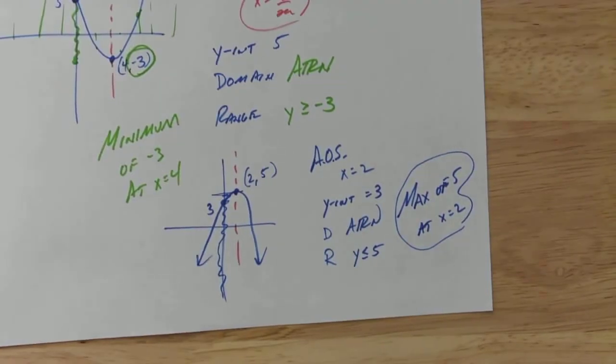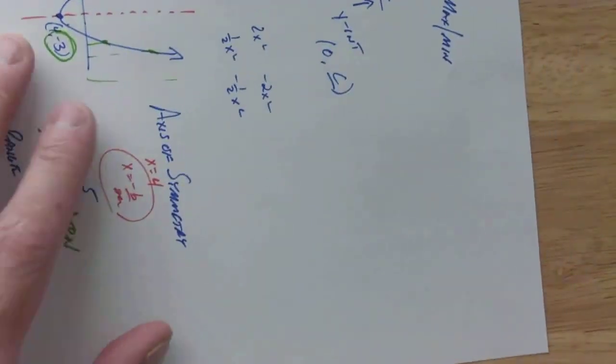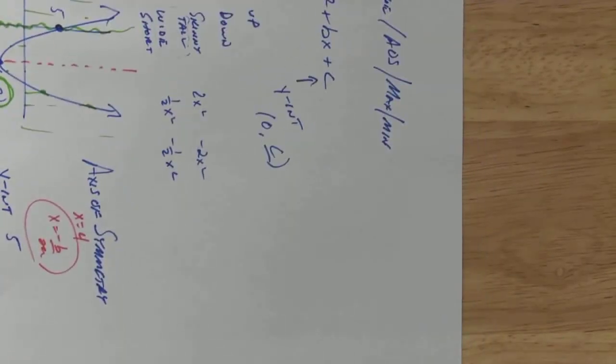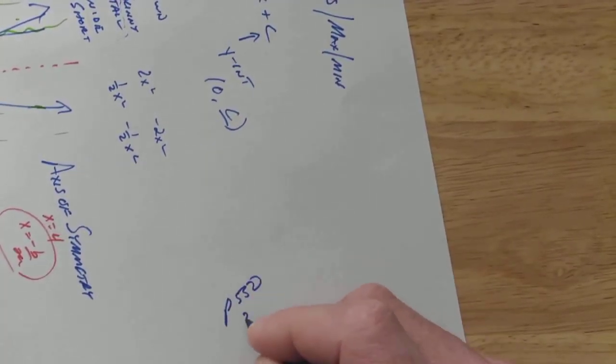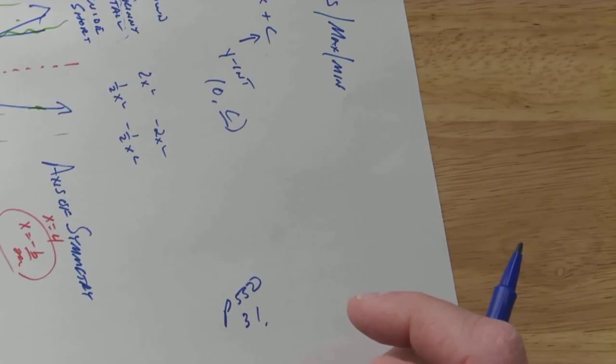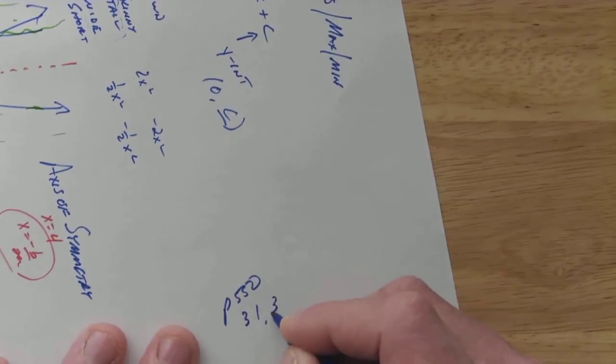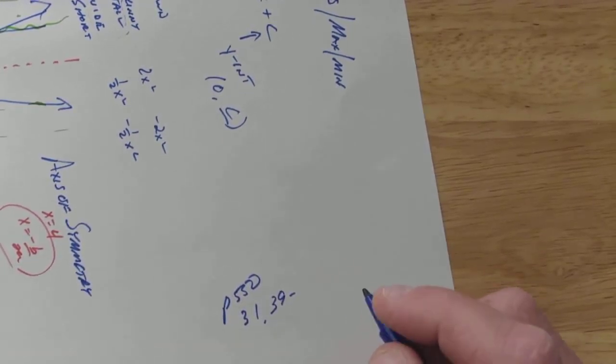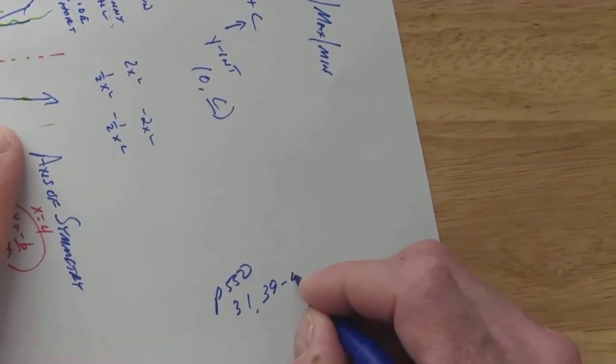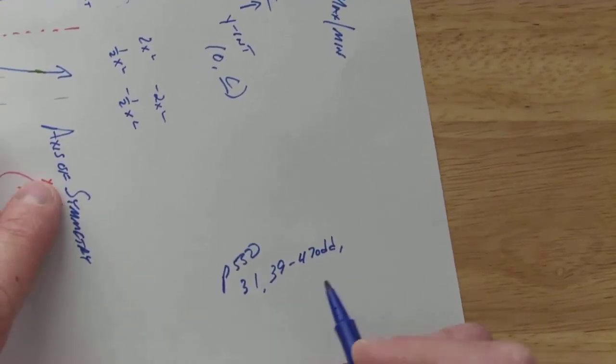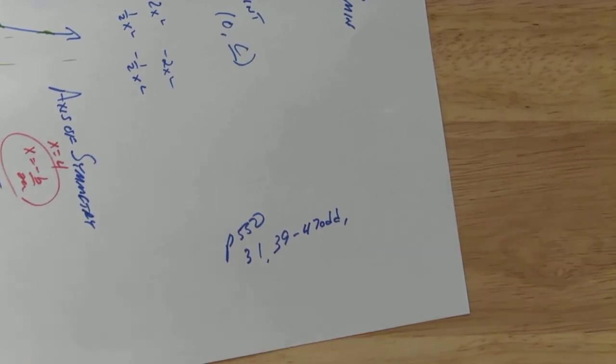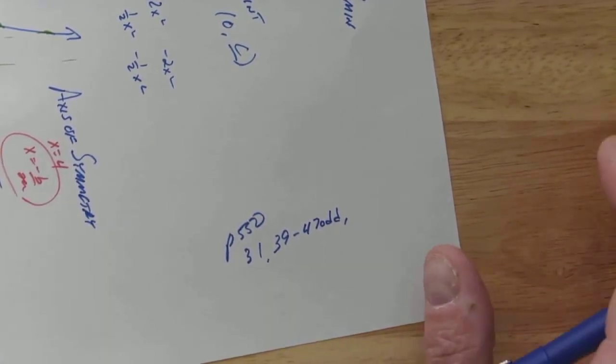Okay. So today, what we're going to do is we are going to do the assignment I actually had picked out for yesterday. I'm going to do page 550. I'm going to do 31, I'm going to shorten this up from what I had because we already covered some of these skills yesterday, through 47 odd. Now, on some of these, you don't have to graph those yet. Don't worry about it.